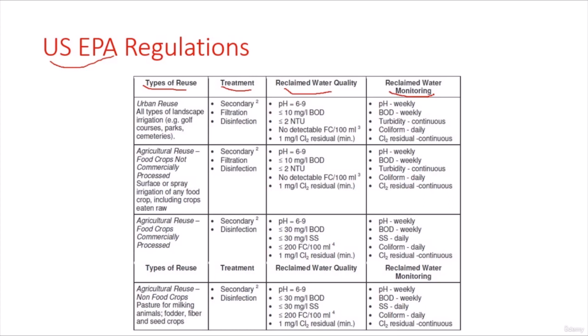You also have to consider these monitoring requirements when doing your budget, because these tests are a little bit expensive. There is a high frequency of tests — some require weekly testing, others daily, others continuous. You might consider this in your budget to see if it is feasible and suitable to reuse the water for irrigation.